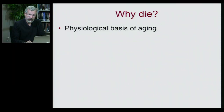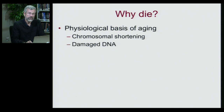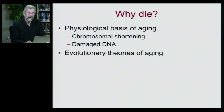When we ask why we die, we want to break this question down into several parts. There's the physiological basis of aging - the machinery of our body that wears out and grows old. This is due to a couple of factors. And then, on a much broader time scale, we want to ask evolutionarily about aging. There are two evolutionary theories of aging.